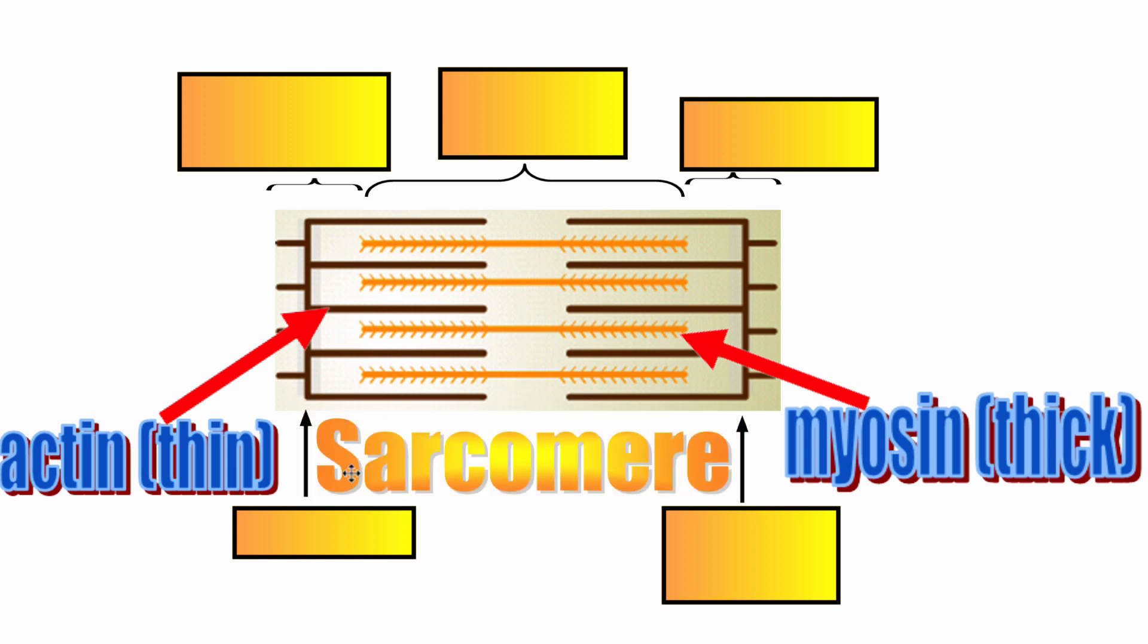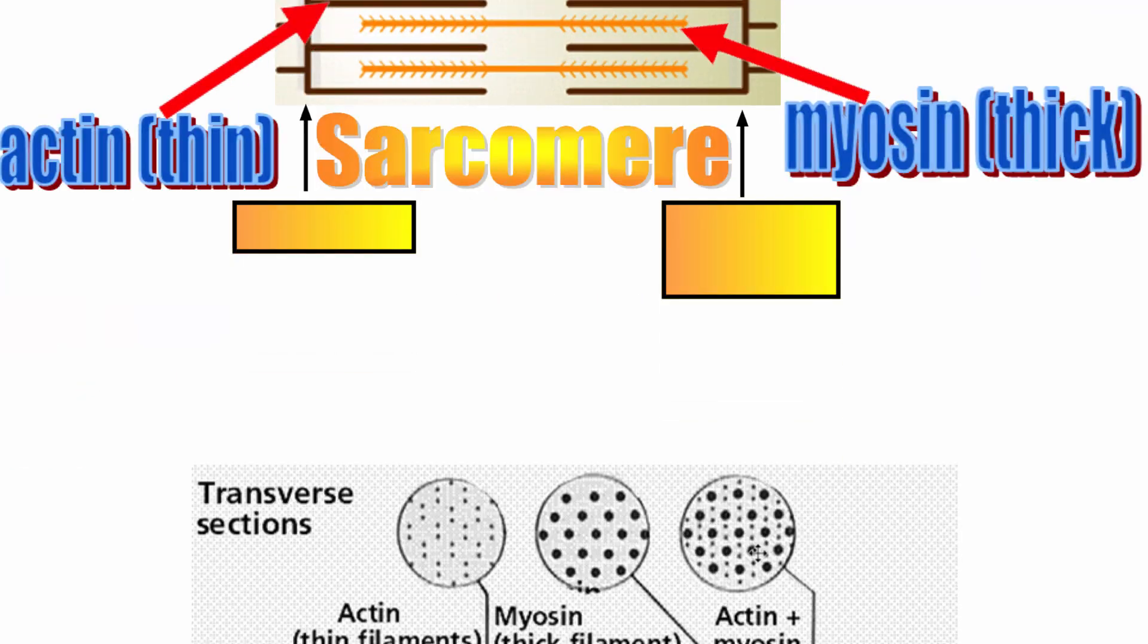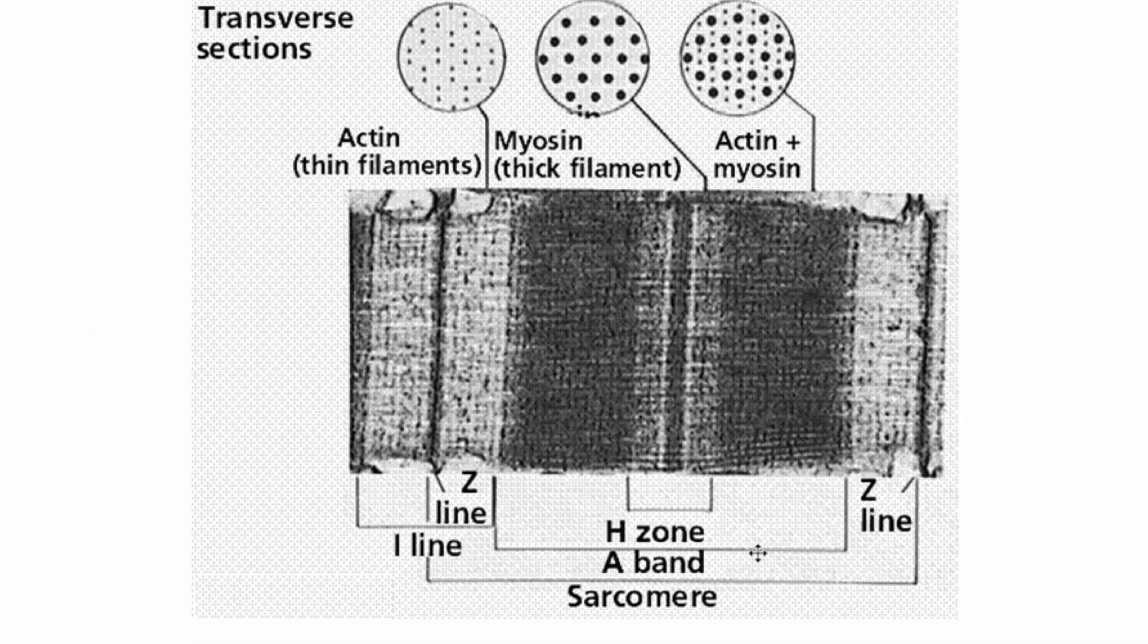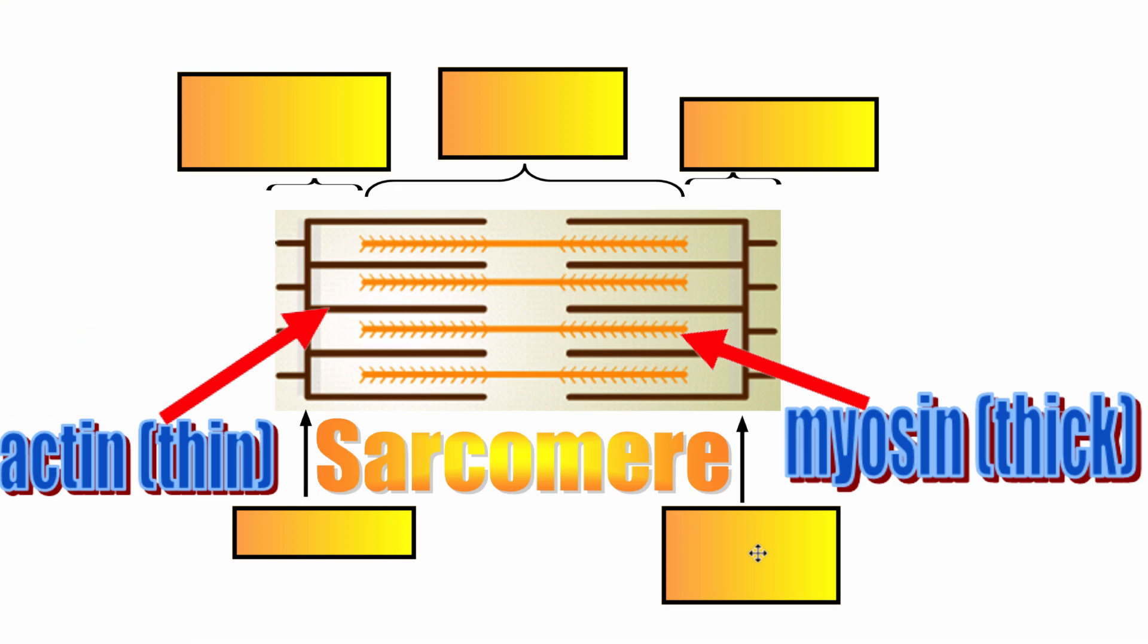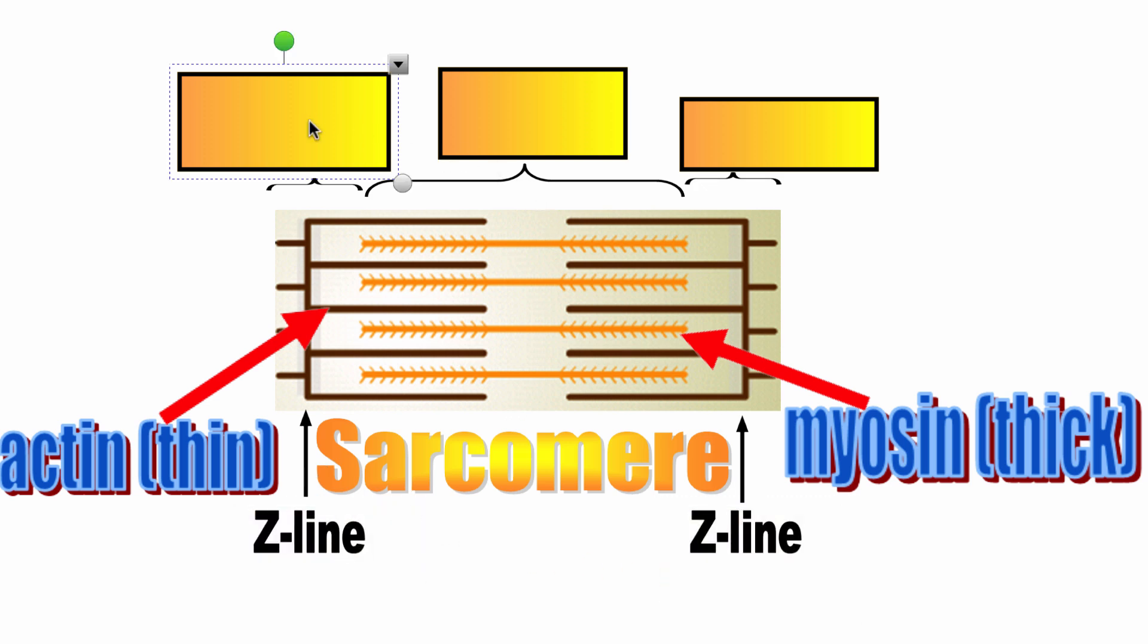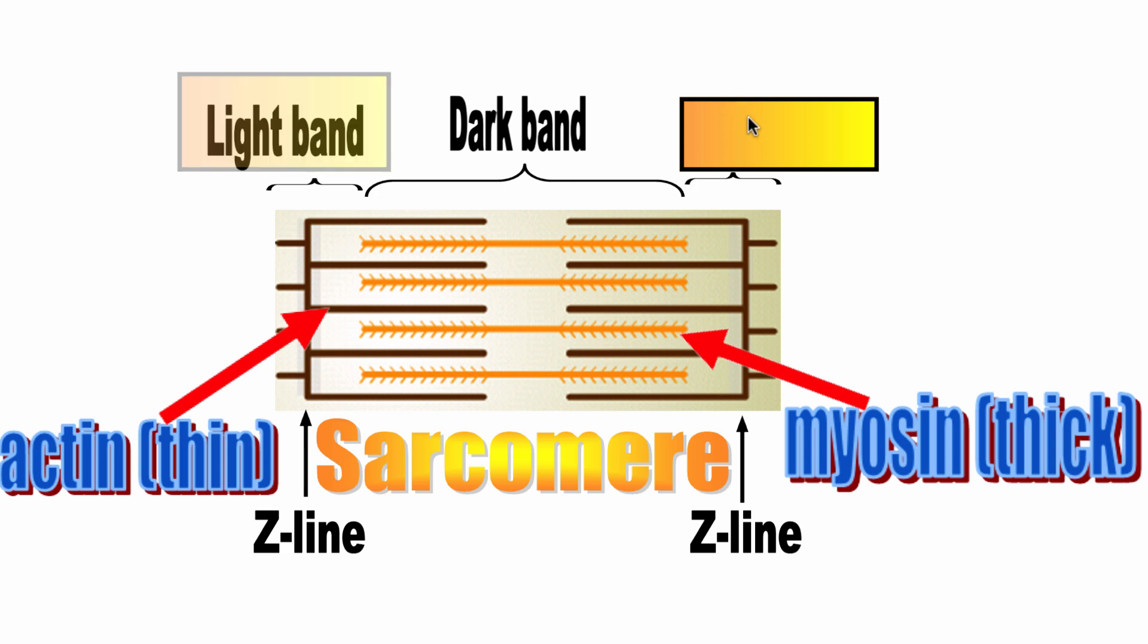We have names for these. So this is called a sarcomere and it goes from this line to this line. And this is actually pretty apparent when you look at an electron microscope image as well. So these are what are referred to as the Z lines. The dark band will appear when you have all of these fibers, these filaments overlapping. So when you have actin and myosin closely overlapped, it appears darker under a microscope. And when there are only actin filaments and there's no myosin running in between them, it appears as a lighter band.